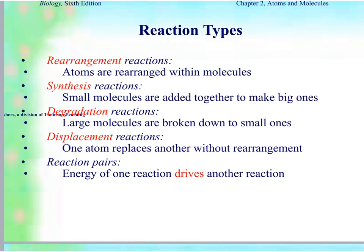The last topic is the different types of chemical reactions, which we'll mainly see during cellular respiration and photosynthesis — so this is just an introduction. Rearrangement reactions: atoms are rearranged. Synthesis reactions: small molecules make large molecules. Degradation reactions: large molecules break down. Displacement reactions: one or more atoms replace other atoms. These reactions occur in pairs, where the energy of one reaction drives another reaction.